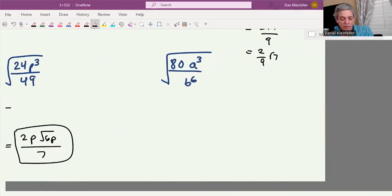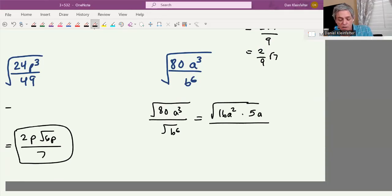80a cubed over b to the sixth power. The numerator, 80a cubed. Denominator, square root of b to the sixth. That 80, I know we think of that as 10 times 8, but it's going to be nicer if you say 16 times 5. And a cubed will be a squared times an a. Down below, we have square root of b to the sixth, and that will be b cubed. 16a squared, its square root will be 4a. So we'll have 4a square roots of 5a down below b cubed.